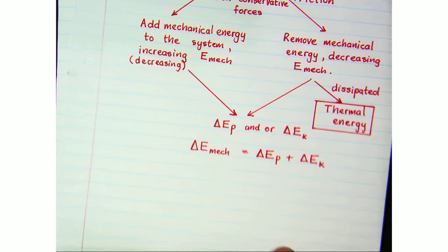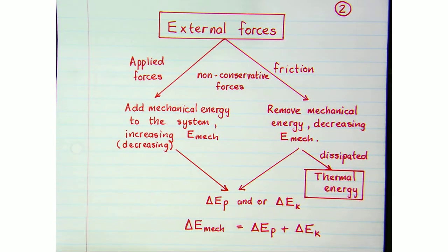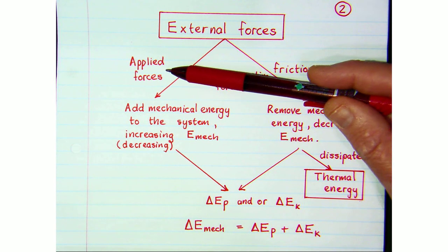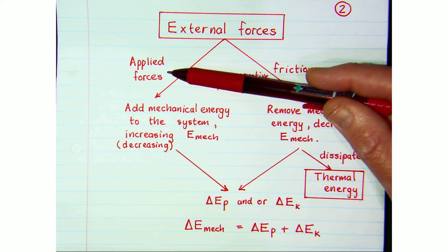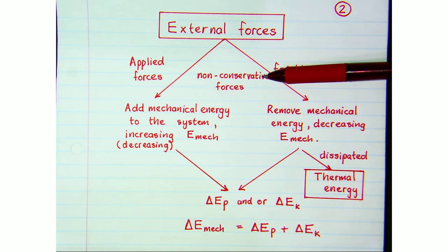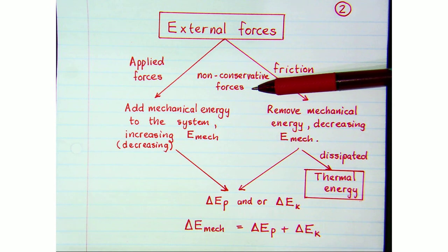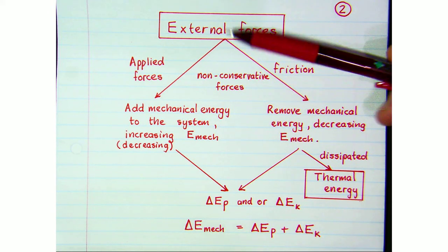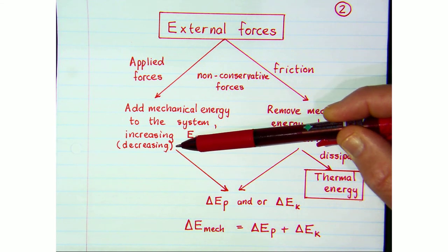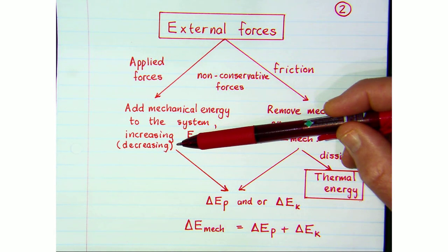To summarize: external forces acting on an object can be applied forces such as pushes or pulls, a force of an engine, tension in a rope or string, or friction. These are considered non-conservative forces because they change the total mechanical energy in the system. External forces either add mechanical energy to the system or take it away — for example a car speeding up or a car slowing down by applying its brakes.